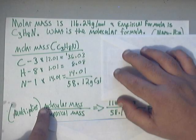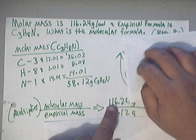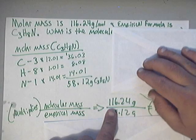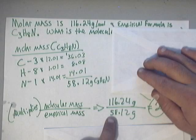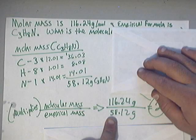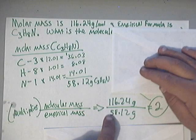which is the 116.24 that they gave us. And they take the empirical mass that we calculated, which was 58.12, and divide them into one another.